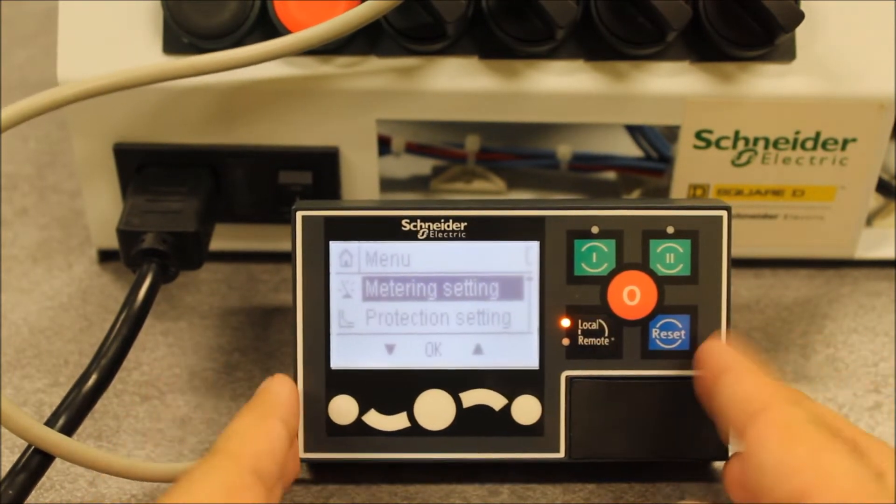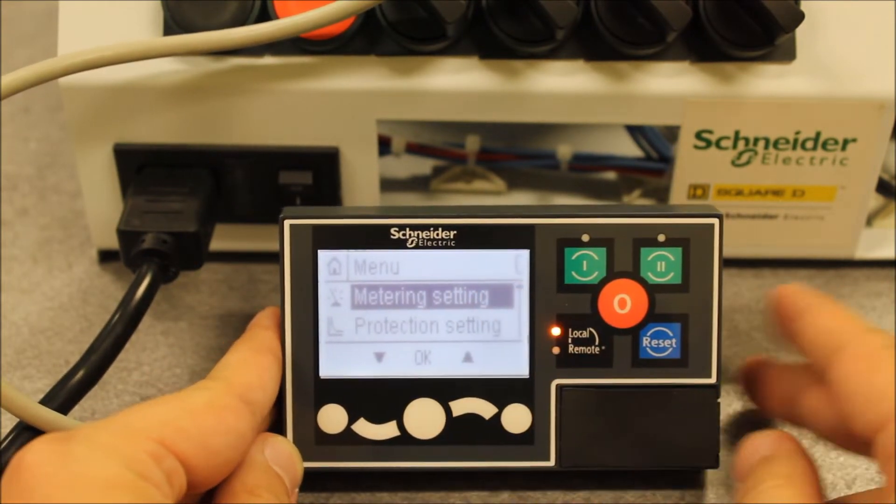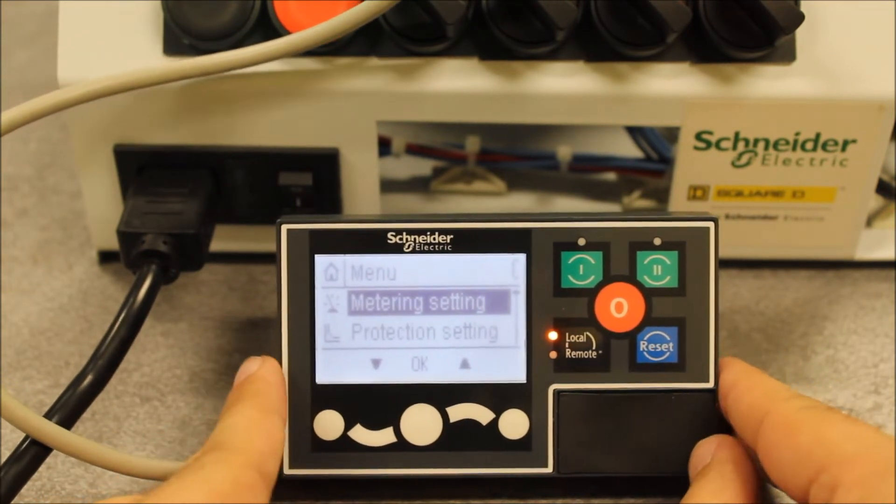So first things first, hopefully you can see here, you have a capital letter C on the top right of your display here on your LTMC display controller.